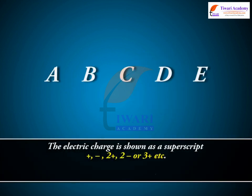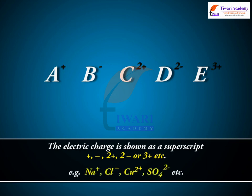The electric charge is shown as a superscript: plus, minus, 2 plus, 2 minus, or 3 plus, etc. Examples include: Na+, Cl−, Cu2+, SO4 2−, etc.